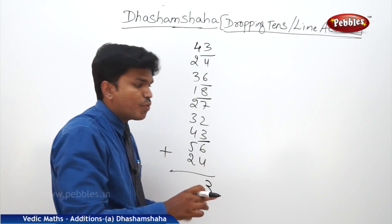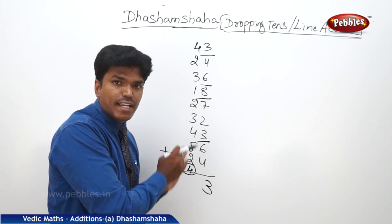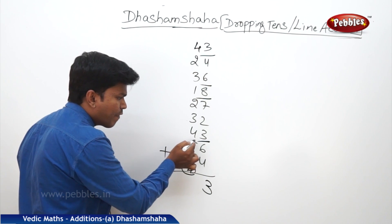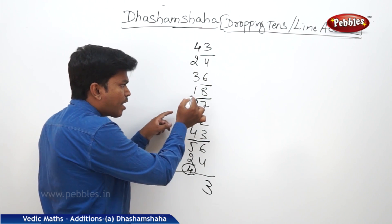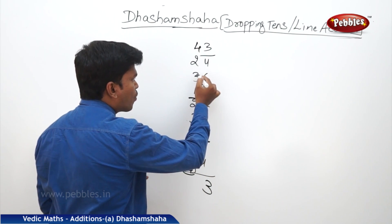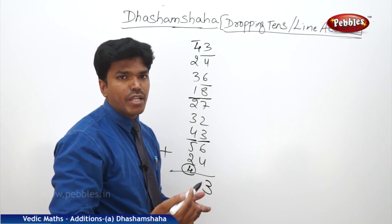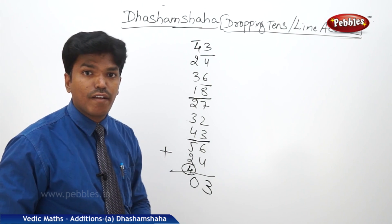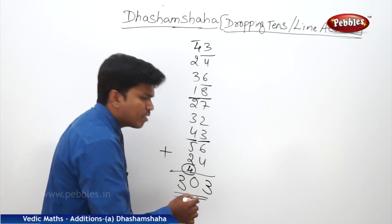Carry these 4 tens to the next line. Now count the second line starting from 4. 4 plus 2? 6. 6 plus 5? 11. More than 10, drop 10. Carry 1. 1 plus 4? 5. 5 plus 3? 8. 8 plus 2? 10. Again more than 10, drop 10. Remaining is 0. Start freshly. 1 plus 3? 4. 4 plus 2? 6. 6 plus 4? 10. Even though it is 10, drop the 10. Remaining is 0. Drop that 0 here. Count how many tens: only 3 tens. So the answer is 303.